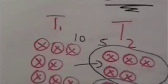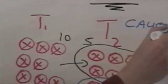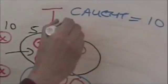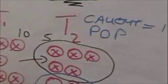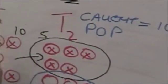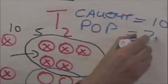So while on the second day we only actually caught ten, the population size is if these five represent ten and these five represent ten, ten and ten equals twenty.